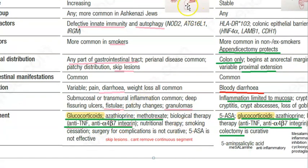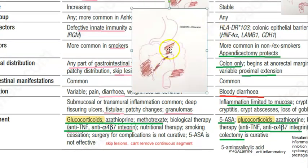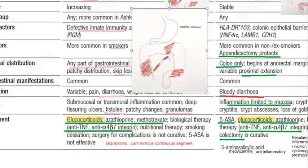Crohn's basically will have skip lesions. So just look at the Crohn's image here. Now because there are skip lesions, you cannot remove them because the disease is not continuous. So basically you will have to just manage this medically.